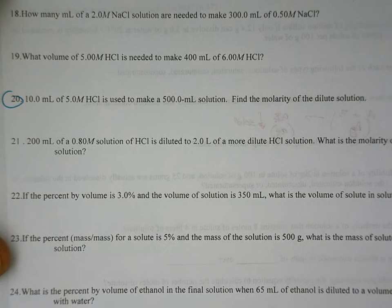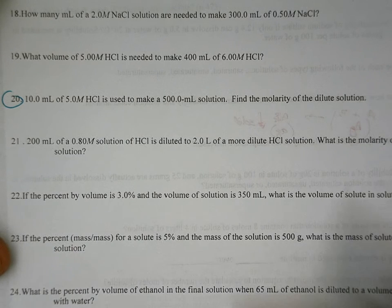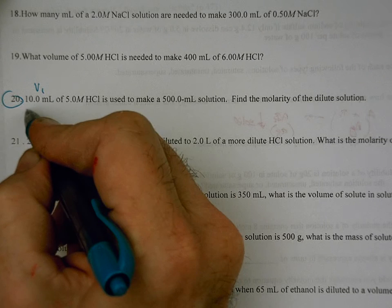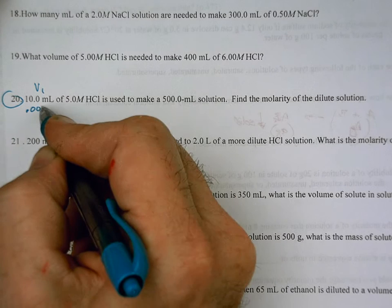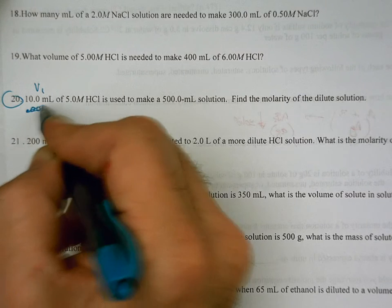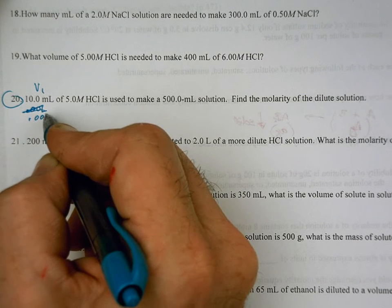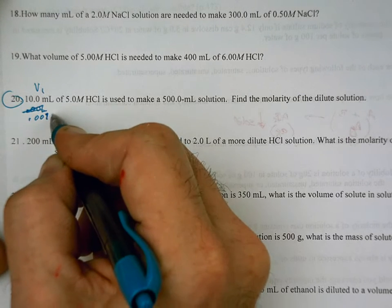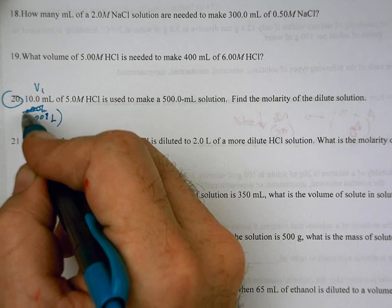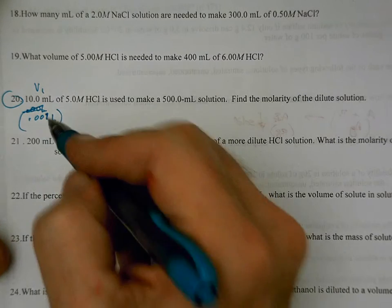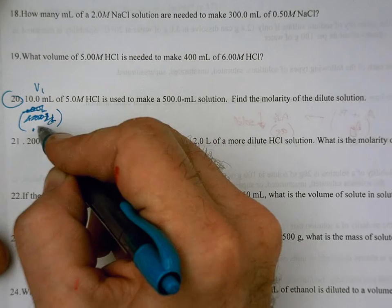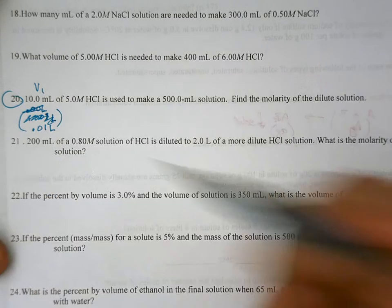Question number 20, it is a dilution problem. So we have 10 milliliters. We'll call that volume number one. Now, I usually convert these right away into liters, 0.01 liters. And this will be molarity one (M1).